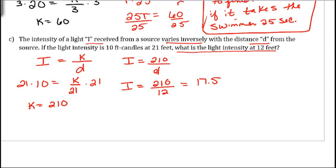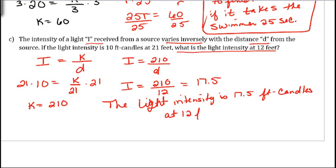And then just restate this. So the light intensity is 17.5, and it's foot-candles, at 12 feet.